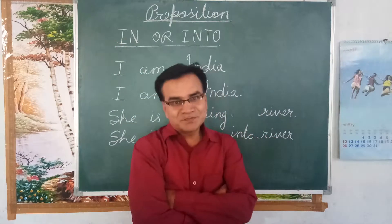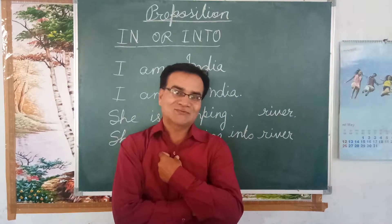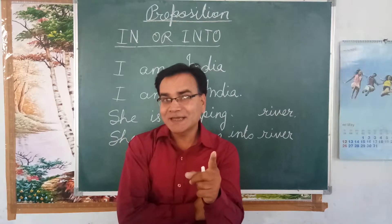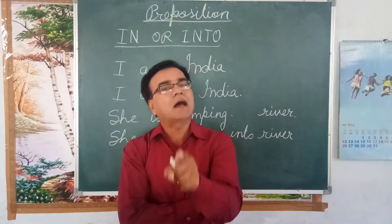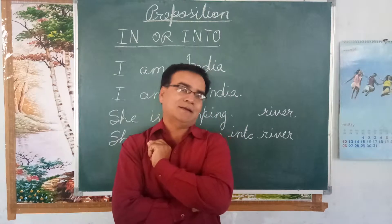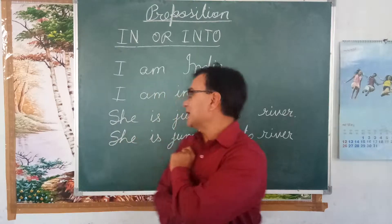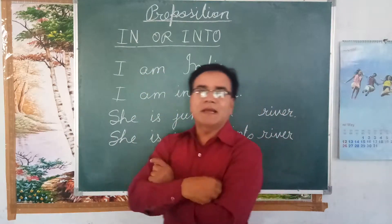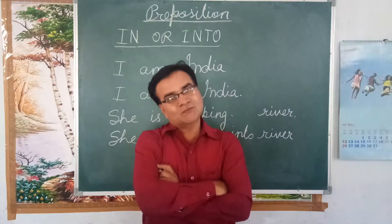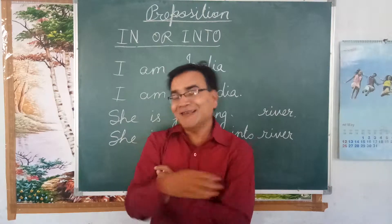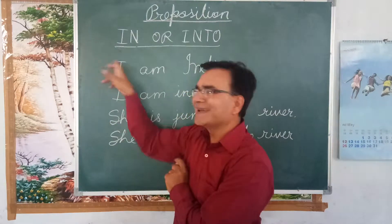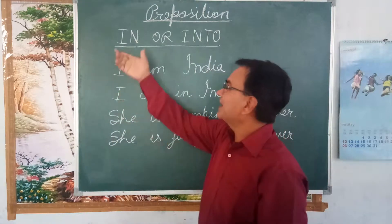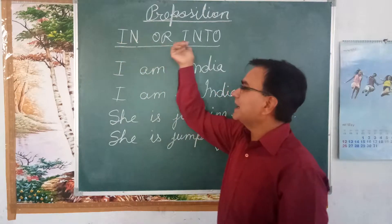The right sentence is 'I am in Agra.' And remember: 'I am India' is wrong — 'I am in India' is the correct form. So always remember to use 'in' with locations.